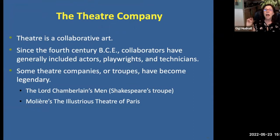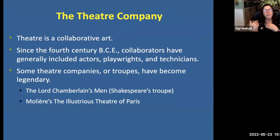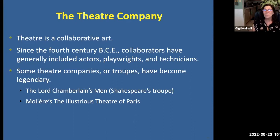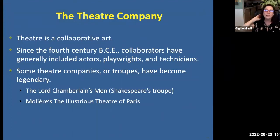Since the 4th century BC, theater collaborators have generally included actors, playwrights, and technicians — those are the three main groups. First someone writes the play, then actors perform it, and technicians put it all together. More recently we've added directors. Some theater companies or troupes have become legendary — like Lord Chamberlain's Men and the King's Men, which were Shakespeare's troupes, and Molière's Illustrious Theater of Paris during his heyday.